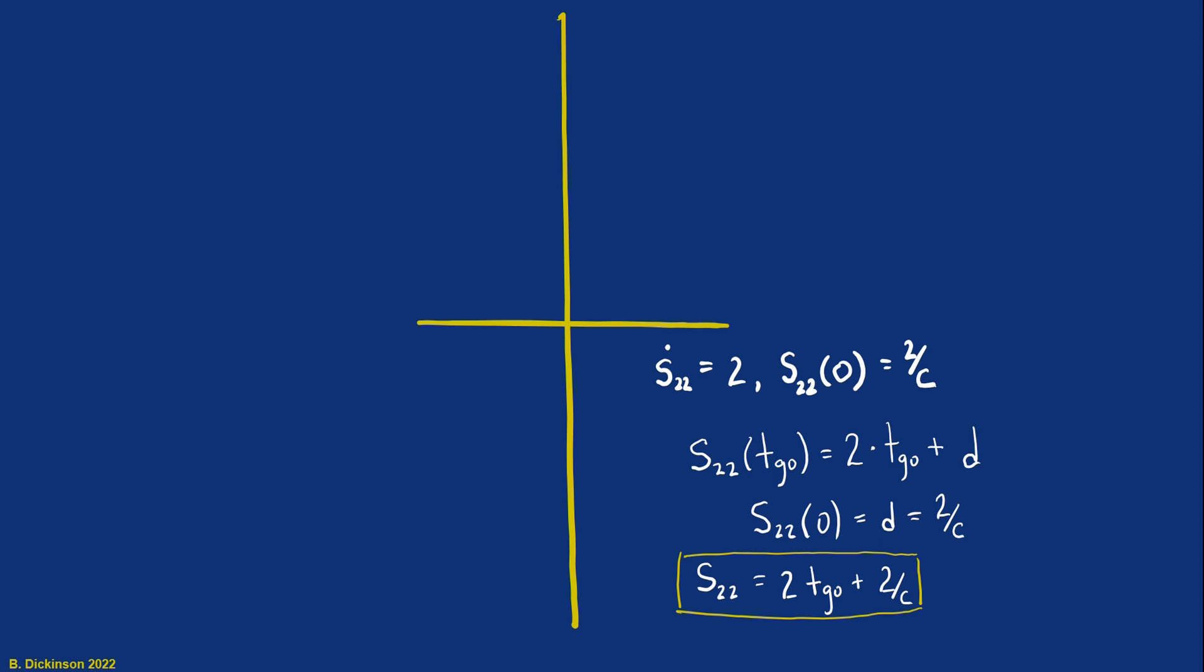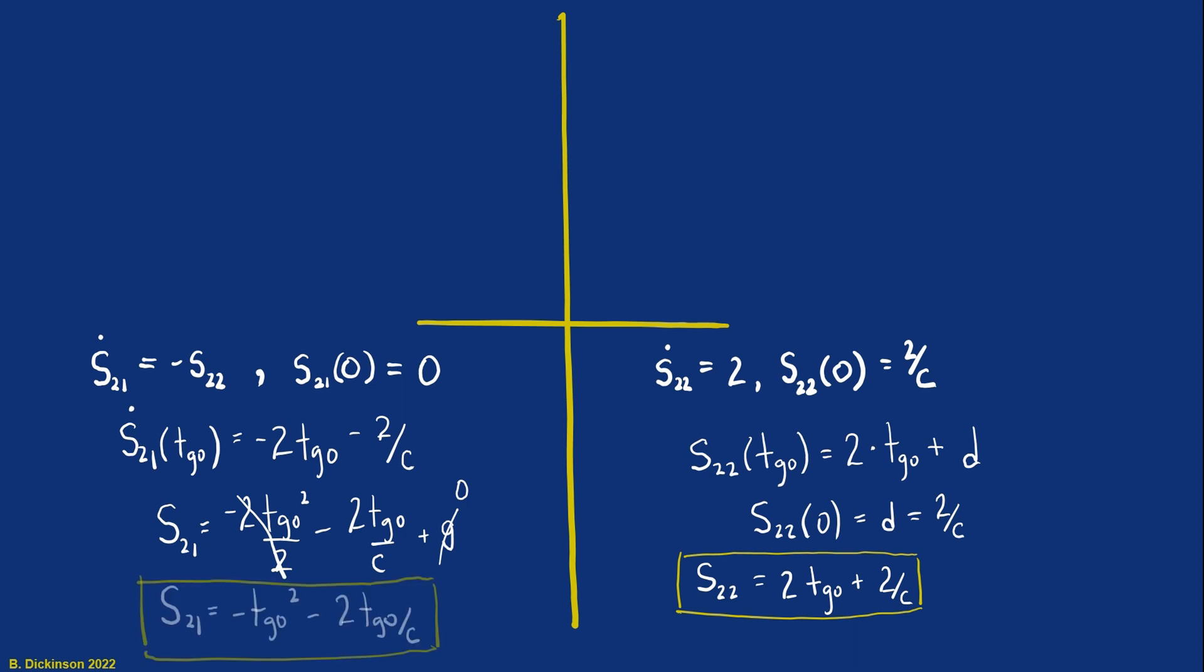Now that we have S22, we can substitute it into the off-diagonal terms of S. Let's do S21. Right hand side minus S22. Okay. Substitute that in. And then directly integrate. Again, a constant of integration appears. Identify it as zero to finally get the S21 results. And then since we're symmetric, S12 is the same.